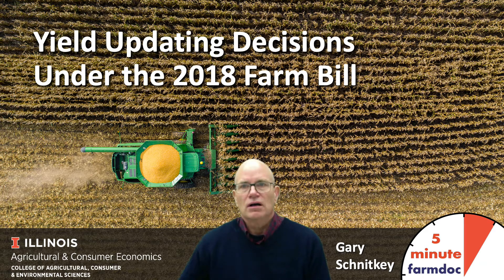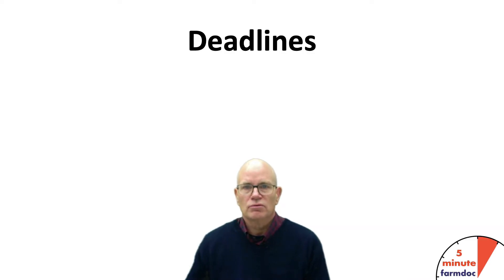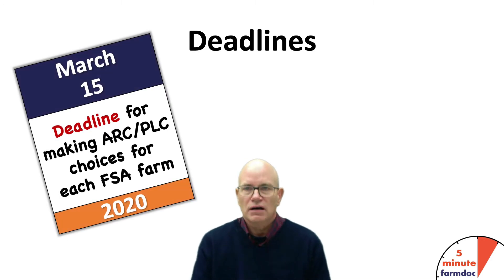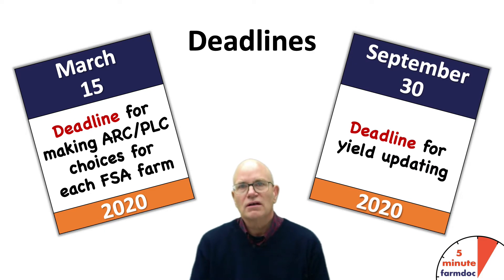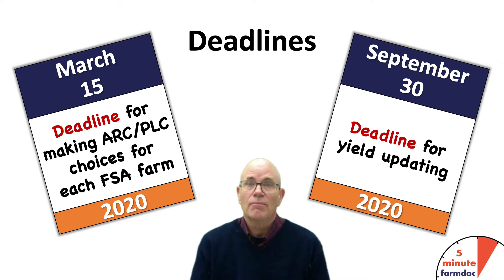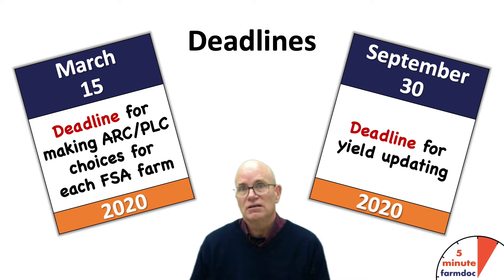This year, under the 2018 Farm Bill, farmers will be able to make their ARC and PLC decisions by March 15th, and that will apply to the 2019 and 2020 years. There is also another deadline, which is September 30th. By September 30th, landowners will be making decisions on each FSA farm for each program crop, whether to keep the current yield or update the yield. Those decisions will impact program yields or PLC yields on farms after and including 2020.